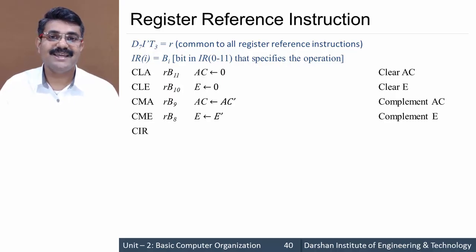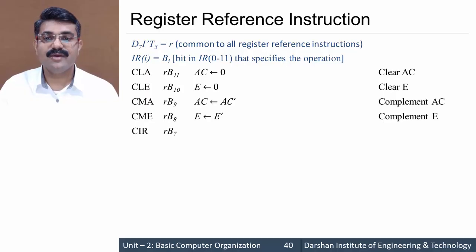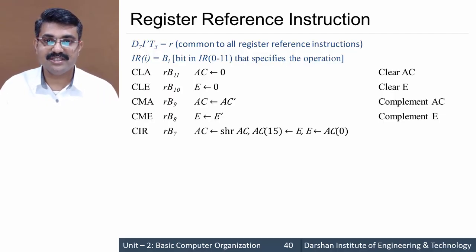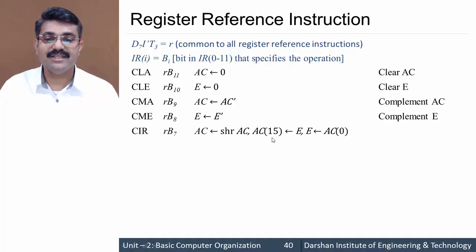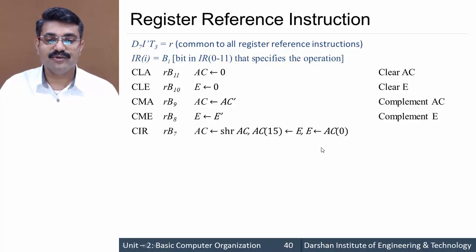The next instruction is CIR — circulate right — which circulates the accumulator and E flip-flop to the right. It happens at r·b7. The register transfer is: AC equals shift-right AC, meaning all bits of the accumulator are shifted right by 1. Then the bit stored in E is copied to AC[15], and the bit stored in AC[0] is copied to E. This gives us a circular shift right.